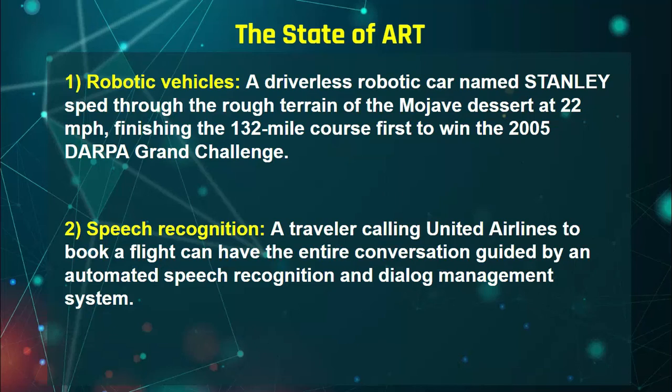The second example is speech recognition. A traveler calling United Airlines to book a flight can have the entire conversation guided by an automated speech recognition and dialogue management system. Sometimes when you go to another country other than an English-speaking one, or when you call an airline, different languages are displayed and handled by the system.